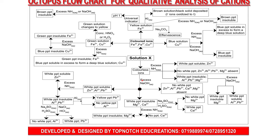We mostly start by adding sodium hydroxide until in excess, or aqueous ammonia until in excess. When you add sodium hydroxide until in excess, there are three possible observations. First: white precipitate soluble in excess — that means zinc, aluminum, or lead is present. We give them the mnemonic ZAP.